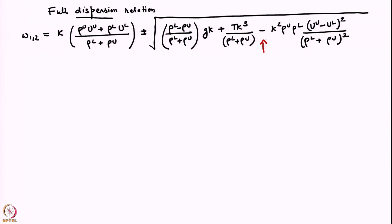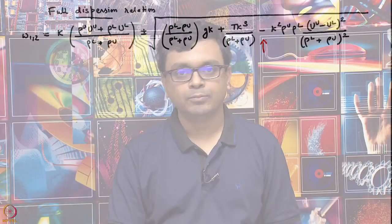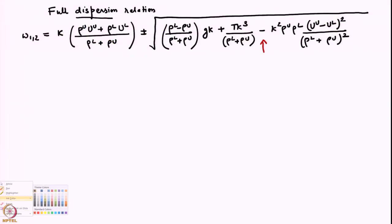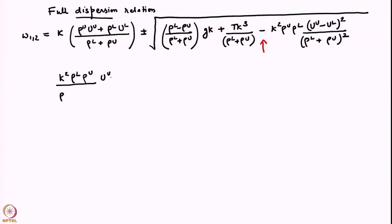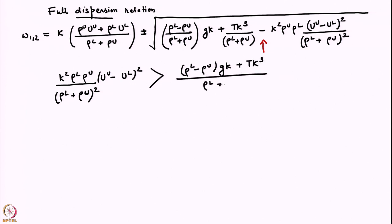Let us look at the case where we have a statically stable configuration — heavier fluid below, lighter fluid above — but now both fluids are moving with some speed U_U and U_L. This is typical of an air-water scenario where we have a body of water over which air is blowing. What is of interest is that the term K² ρ_L ρ_U (U_U − U_L)² / (ρ_L + ρ_U)², if this exceeds the sum of the first two terms involving (ρ_L − ρ_U), then we are going to get instability.